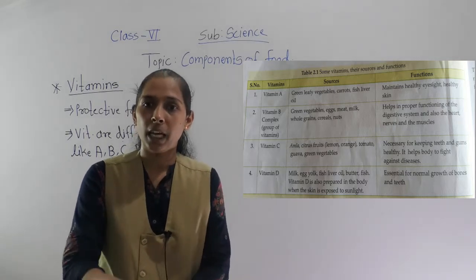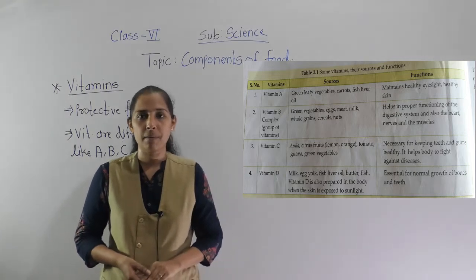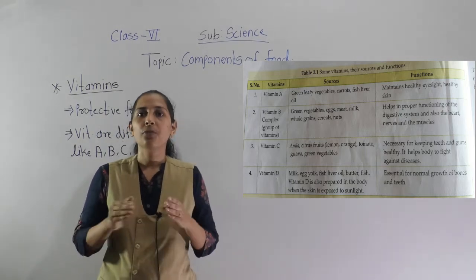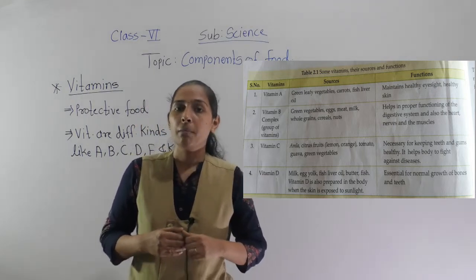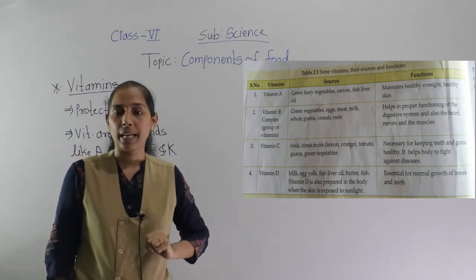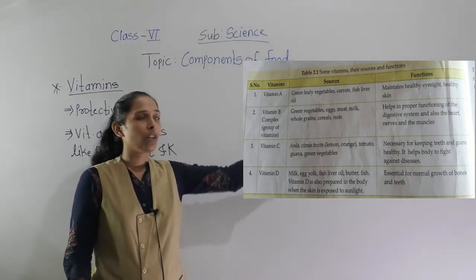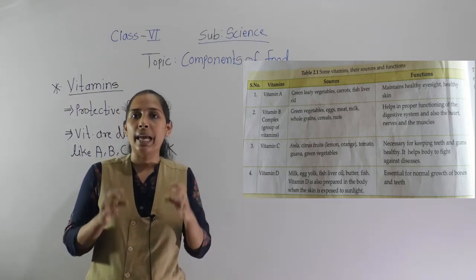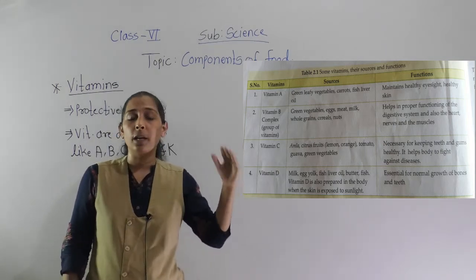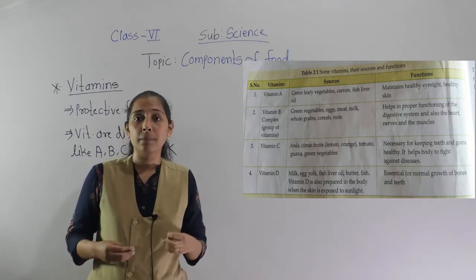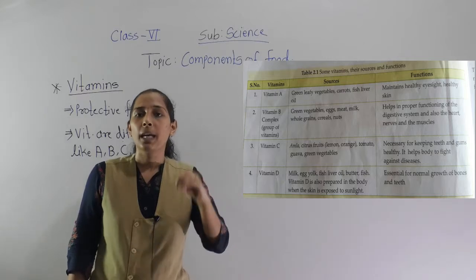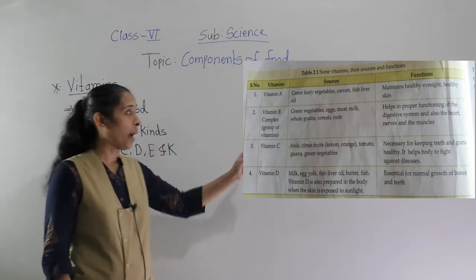First, let's discuss vitamin A. The sources of vitamin A are green leafy vegetables, carrot, and fish liver oil — these are the food materials from which we get vitamin A. The functions of vitamin A are to maintain healthy eyesight and to keep our skin healthy. Vitamin A helps maintain clear, good eyesight and also keeps our skin healthy.